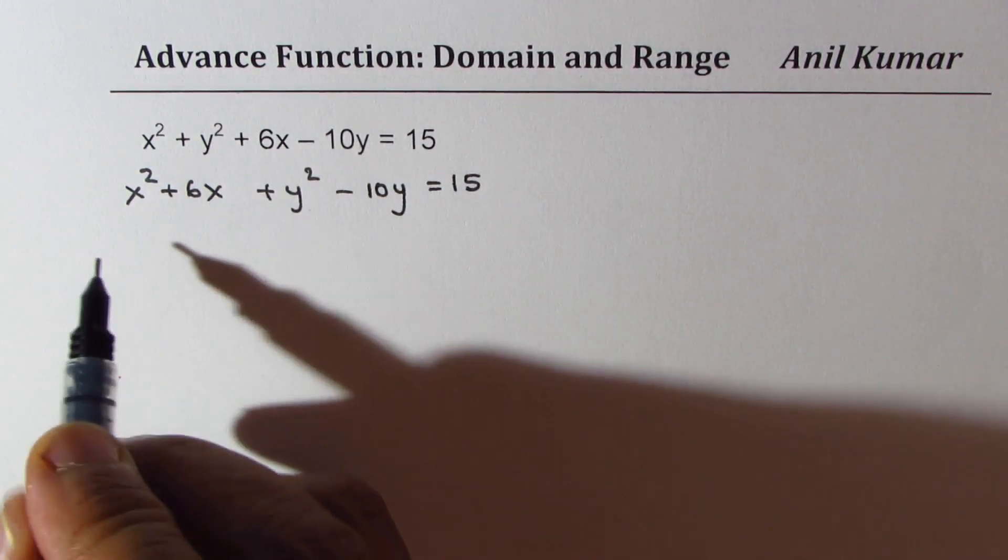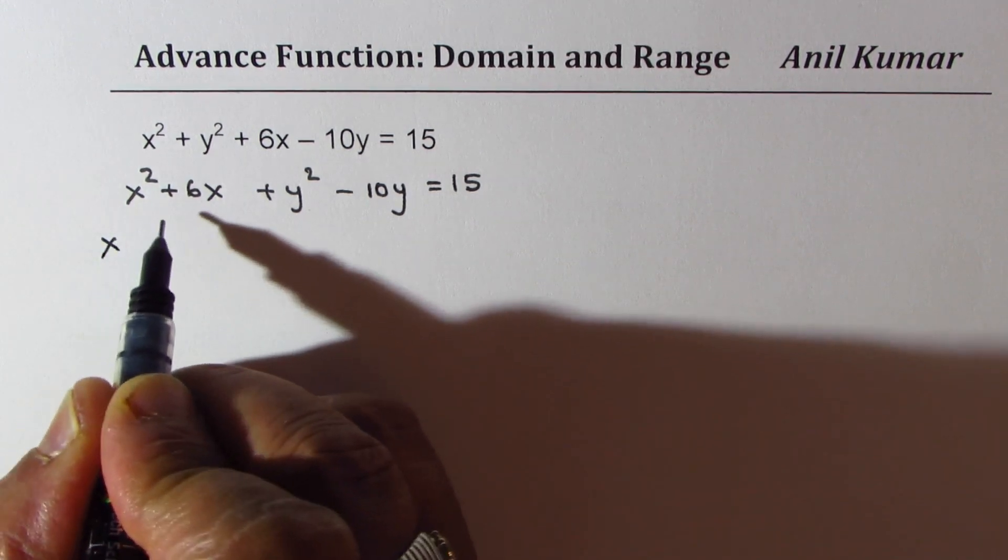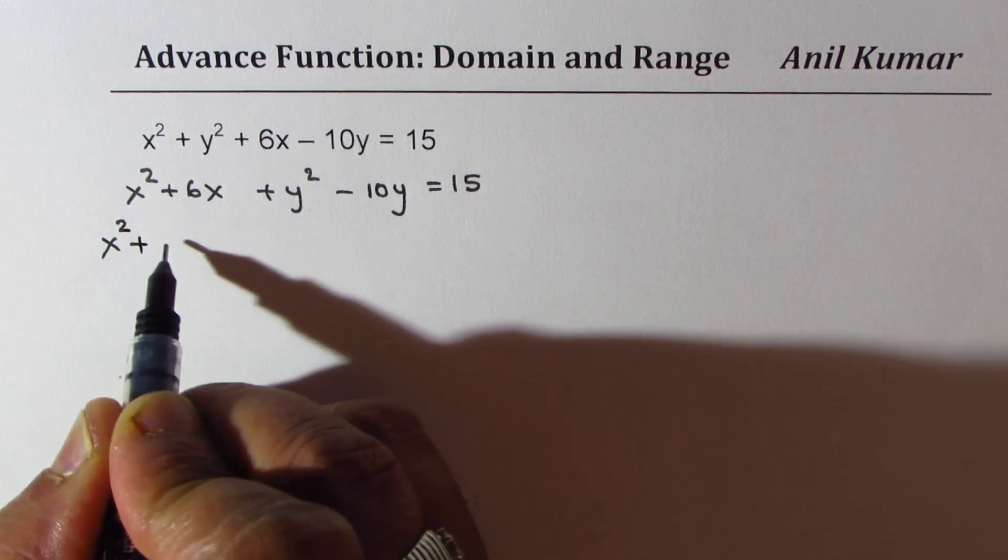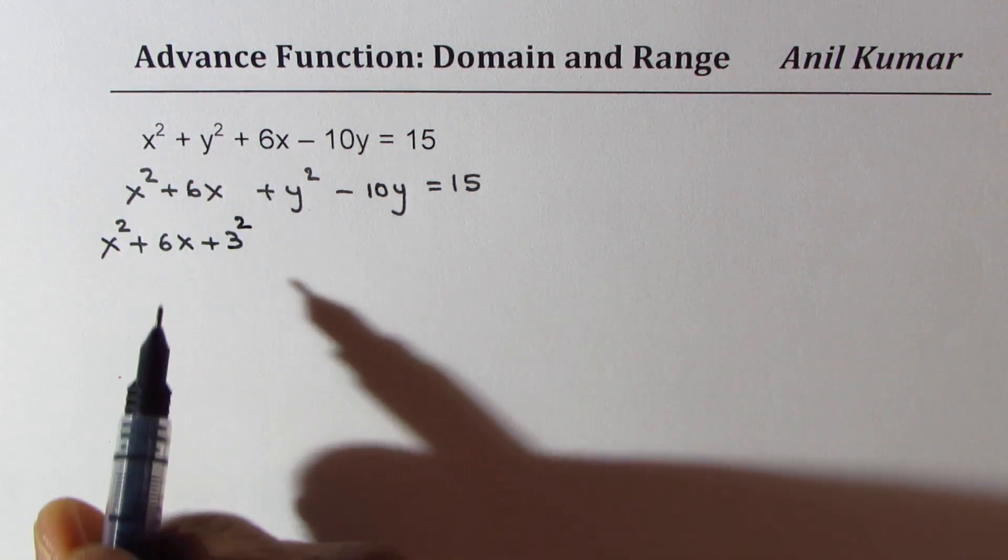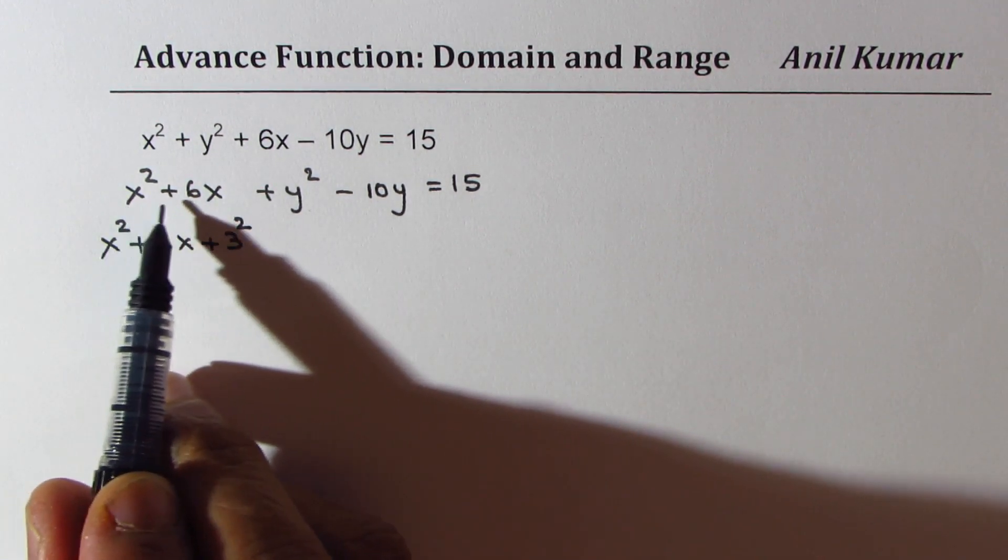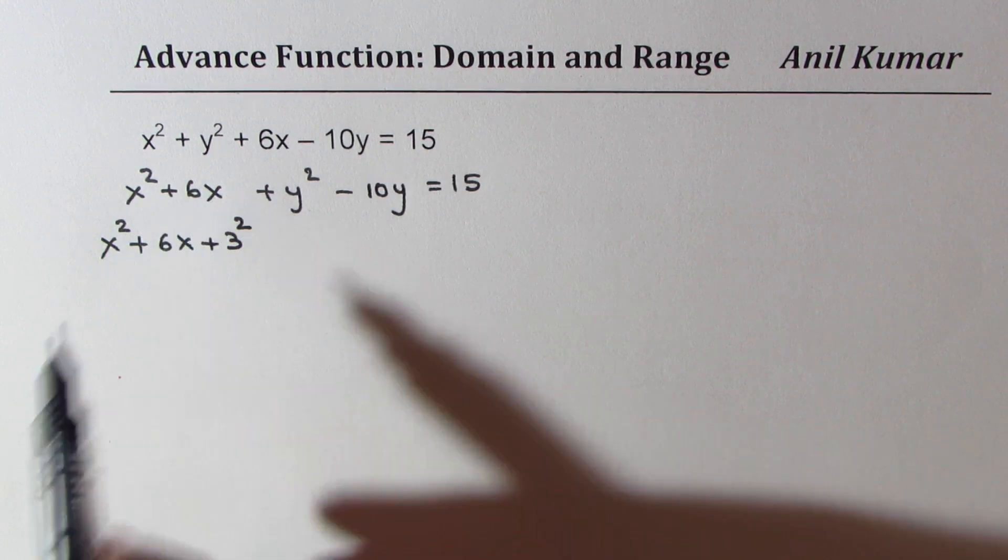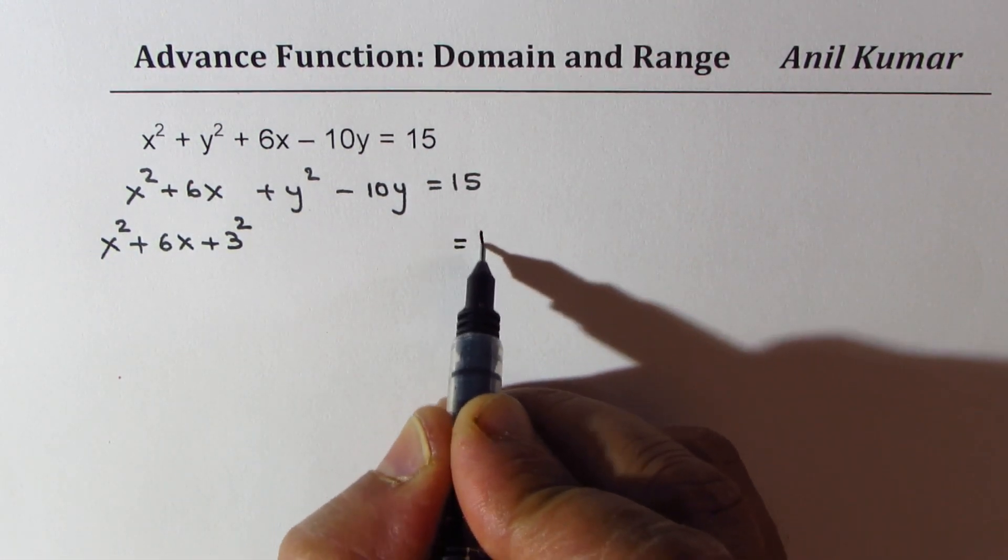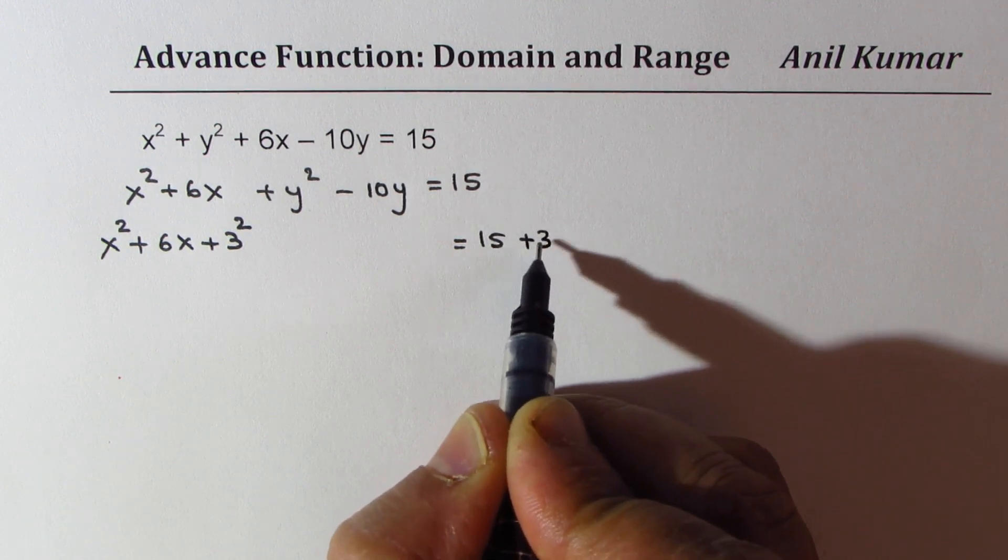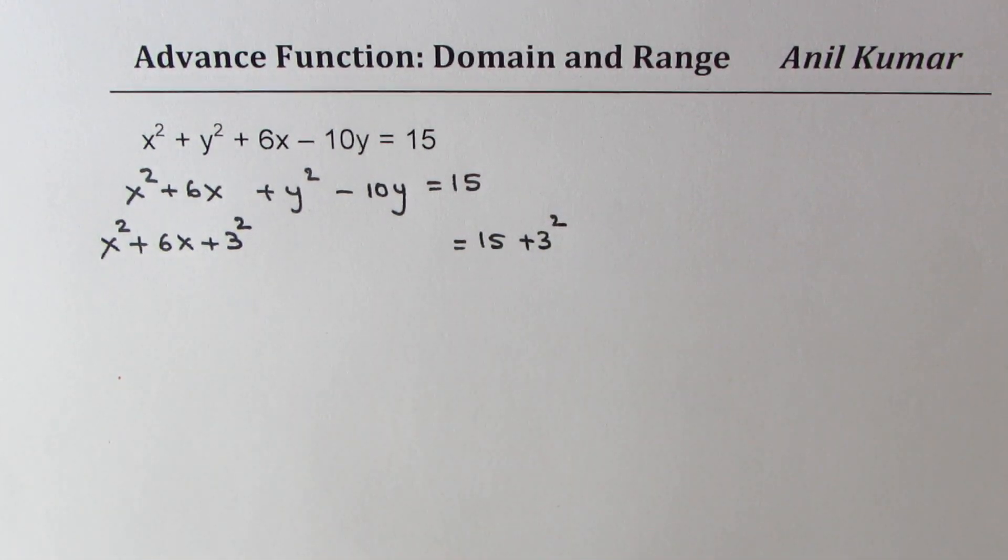Half of 6 is 3 so I am going to add 3 square. So we get x square plus 6x plus 3 square. So that completes the square for these two terms and what we can do here is that we can add 3 square to the right side also. So we are maintaining the same equation.